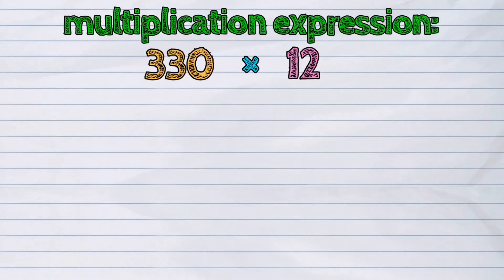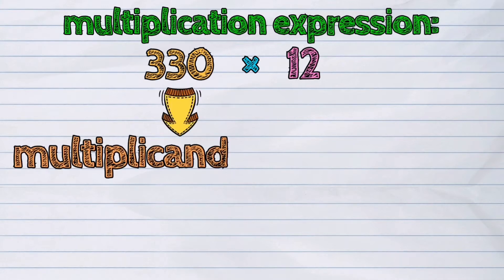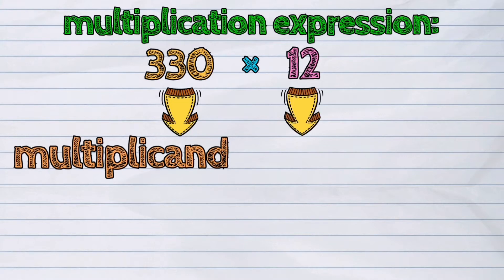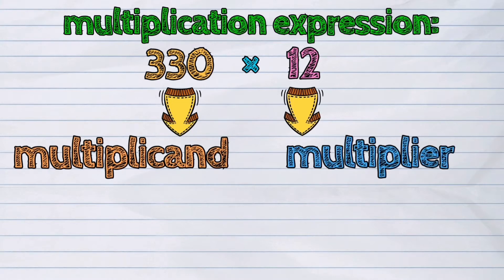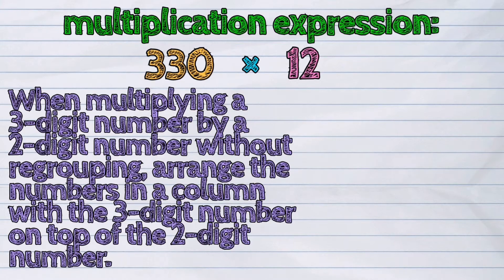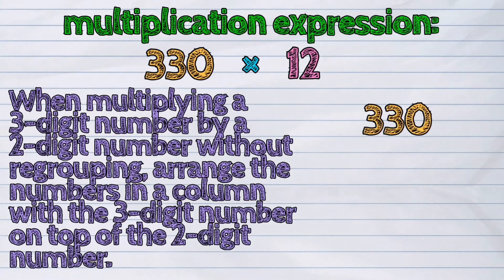The number 330 is called the multiplicand, while the number 12 is called the multiplier. When multiplying a 3-digit number by a 2-digit number without regrouping, arrange the numbers in a column with the 3-digit number on top of the 2-digit number.